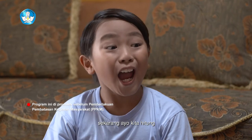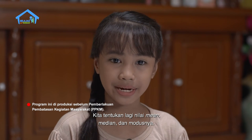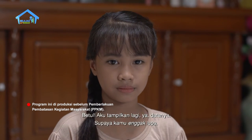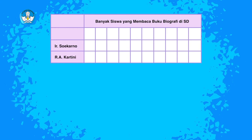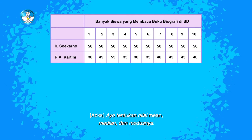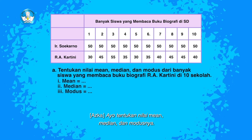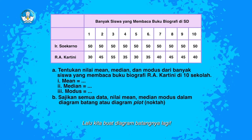Tadi kan untuk membaca biografi Insinyur Soekarno. Sekarang, ayo kita hitung untuk membaca biografi Raden Ajeng Kartini. Kita tentukan lagi nilai min, median, dan modusnya. Aku tampilkan lagi ya datanya supaya kamu tidak lupa. Ayo tentukan nilai min, median, dan modusnya. Lalu, kita buat diagram batangnya lagi.